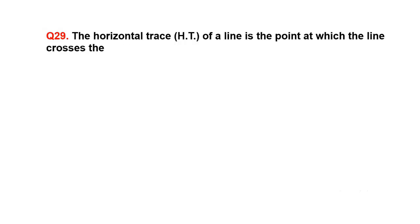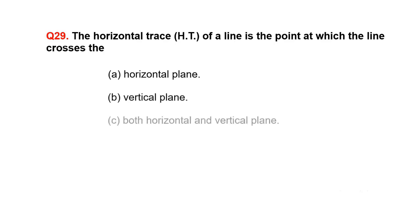The horizontal trace of a line is the point at which the line crosses the: A. Horizontal plane, B. Vertical plane, C. Both horizontal and vertical plane.